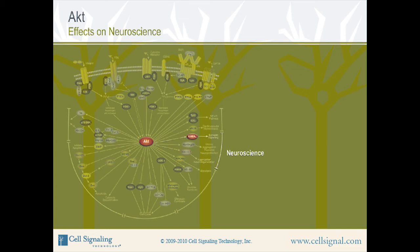Another AKT target in neuroscience is the GABA-A receptor. The A-type gamma-aminobutyric acid receptor is a ligand-gated chloride ion channel that mediates fast synaptic inhibitory transmission. Phosphorylation of this receptor by AKT increases the number of receptors present on the cell's surface, thereby increasing synaptic transmission.